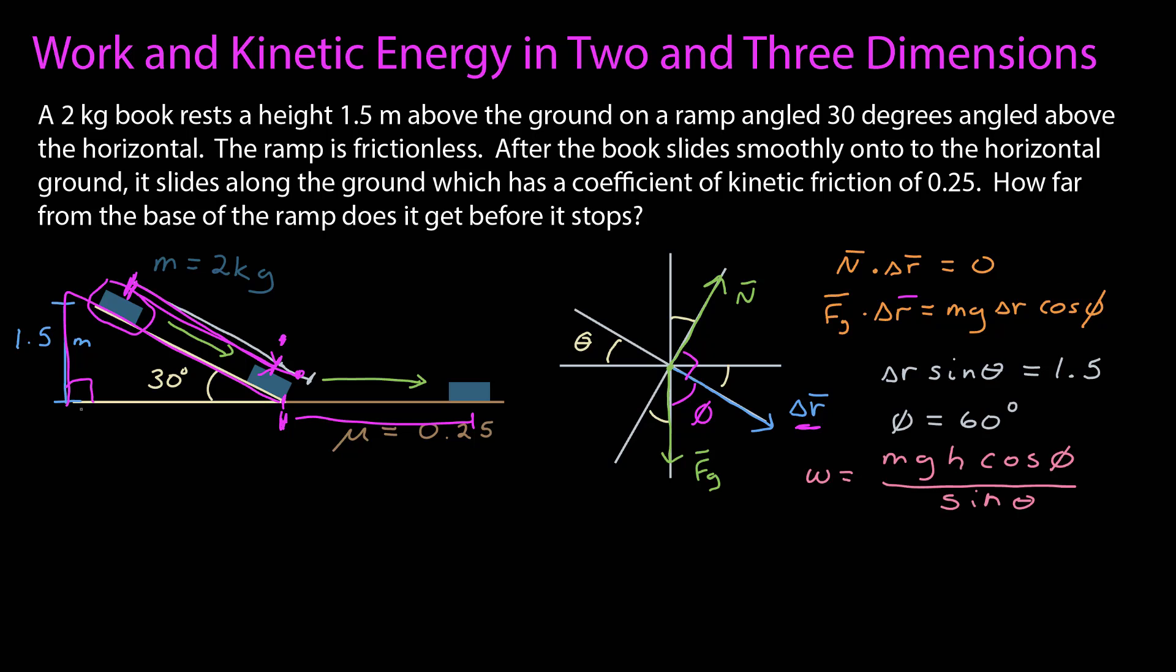I've found before that phi is equal to 60. And so the work is just the work due to the gravitational force, which is mg times 1.5, which I haven't called anything. I'll call that H. So I can just leave it as a symbol, cosine phi divided by sine theta.